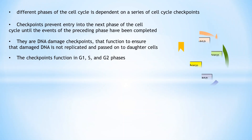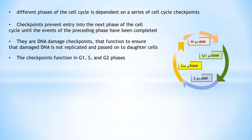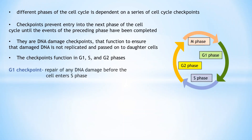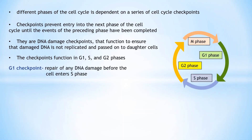Coming to the G1 checkpoint: arrest at the G1 checkpoint allows repair of any DNA damage that occurs before the cell enters S phase.